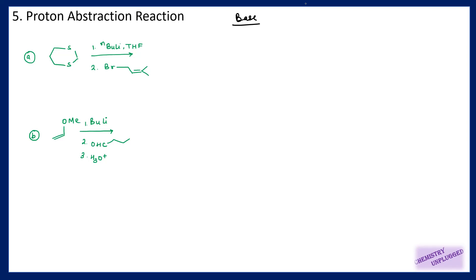When a proton is close to a heteroatom — meaning oxygen, nitrogen, and sulfur — it can be acidic. And when removal of the proton generates an aromatic system, then it will be your acidic proton.